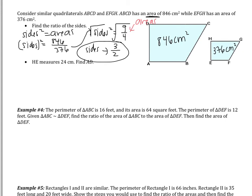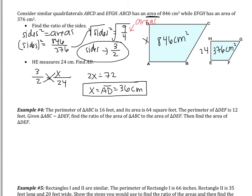Now use that ratio. HE measures 24 centimeters — find AD. These are corresponding sides, so I can set up a proportion. The ratio of the sides is 3 to 2. The 24 corresponds to the smaller figure, so 24 goes with the 2, and x goes in the numerator. Using the cross products property: 2x equals 3 times 24, which is 72. So AD equals 36 centimeters. That's correct — it's the bigger figure, so the side should be larger than 24.